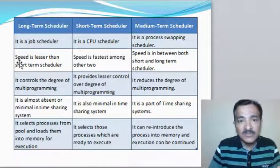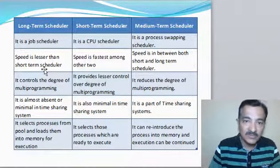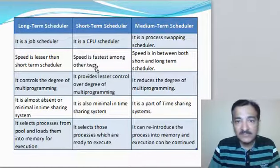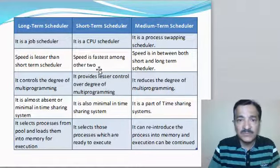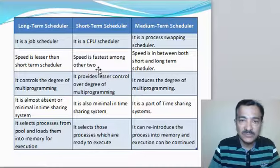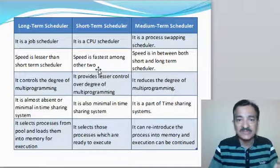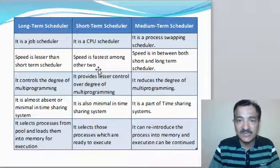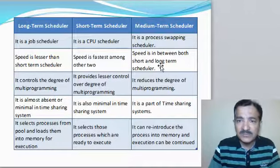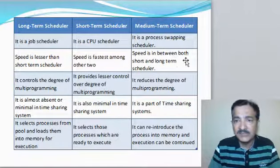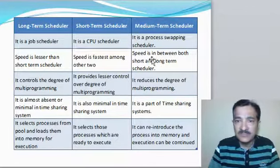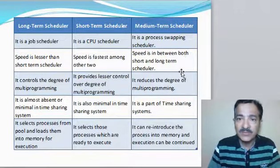The long term scheduler speed is lesser than the short term scheduler. The short term scheduler is the fastest among the three because it is directly servicing the CPU, which runs at very high speed. The medium term scheduler speed is in between both the long and short term schedulers.